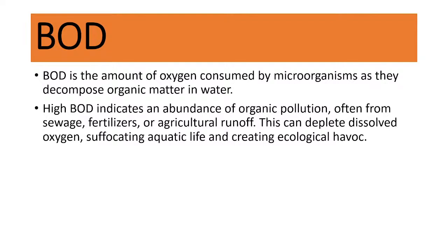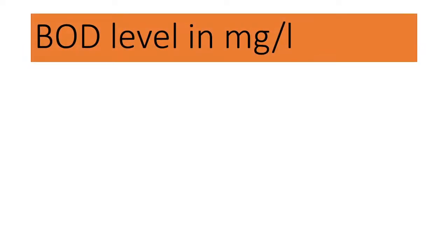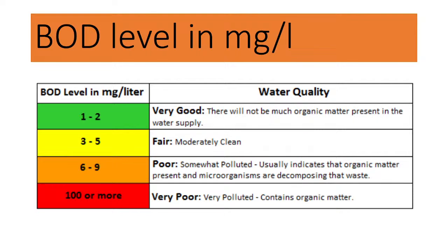High values of Biological Oxygen Demand indicate water pollution. Here are the BOD levels in milligrams per liter: 1–2 mg/L is very good with no significant organic matter; 3–5 mg/L is fair and moderately clean; 6–9 mg/L is poor, indicating somewhat polluted water with organic matter being decomposed by microorganisms; and 100 or more mg/L means very polluted water with a lot of organic matter.